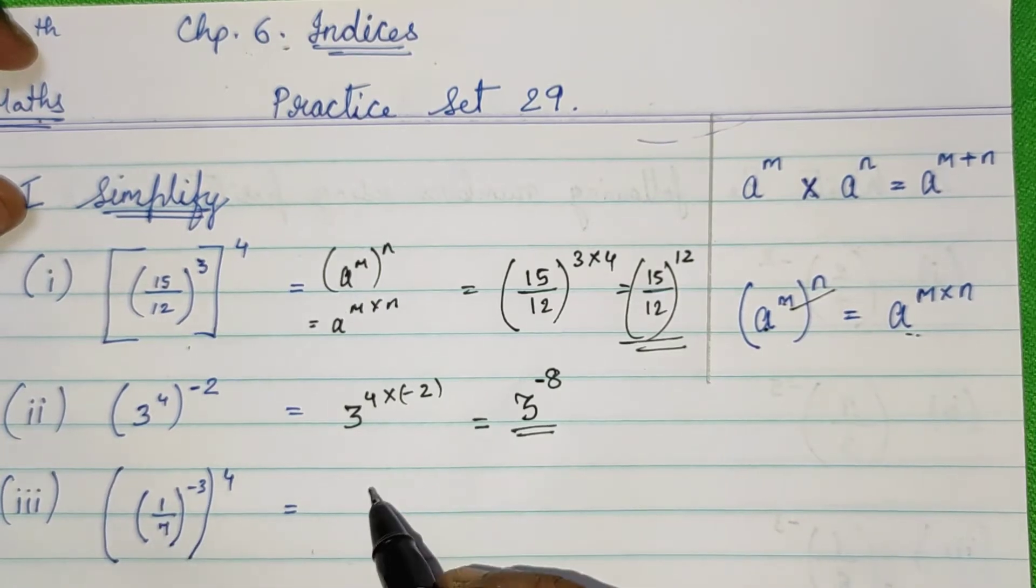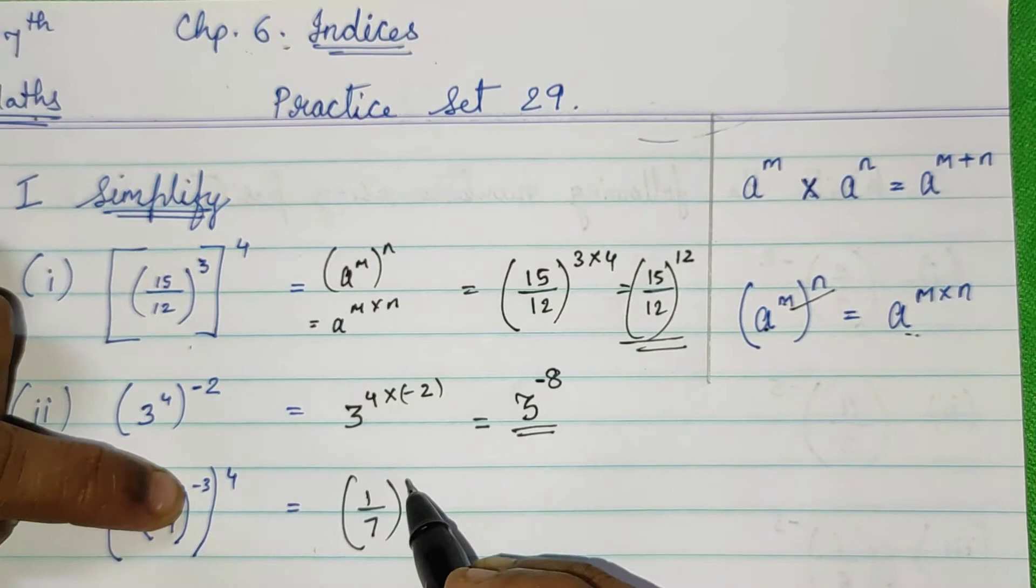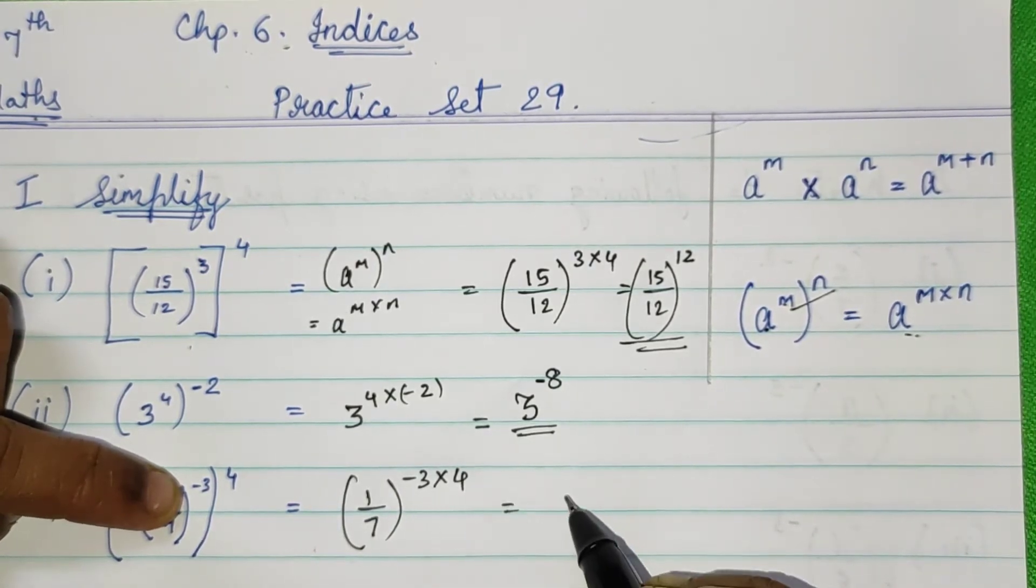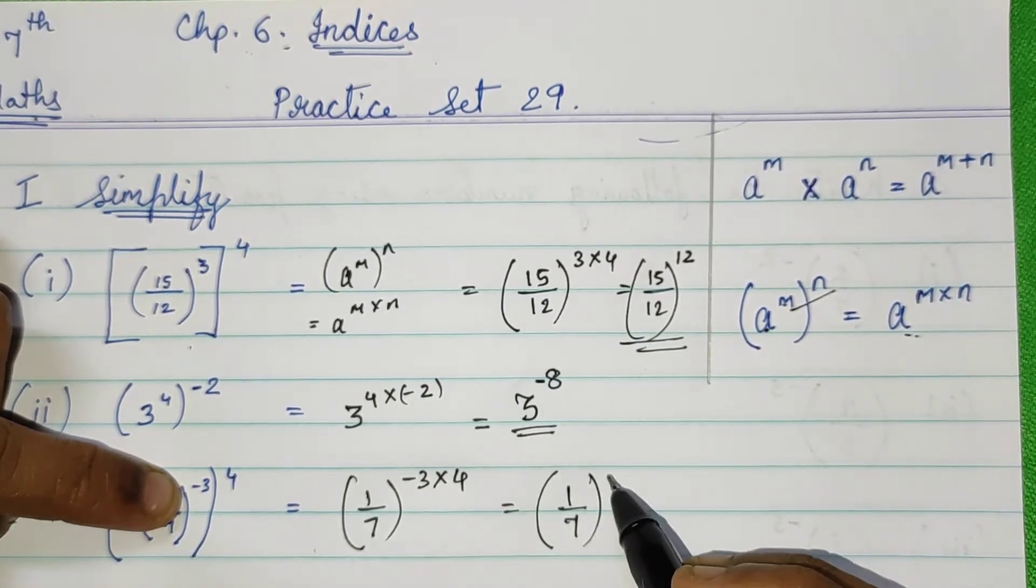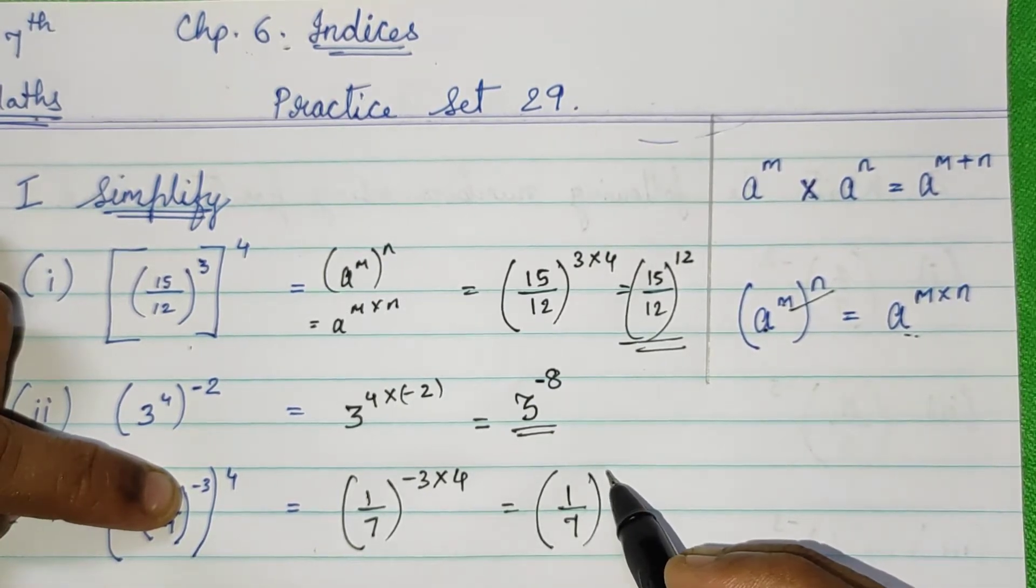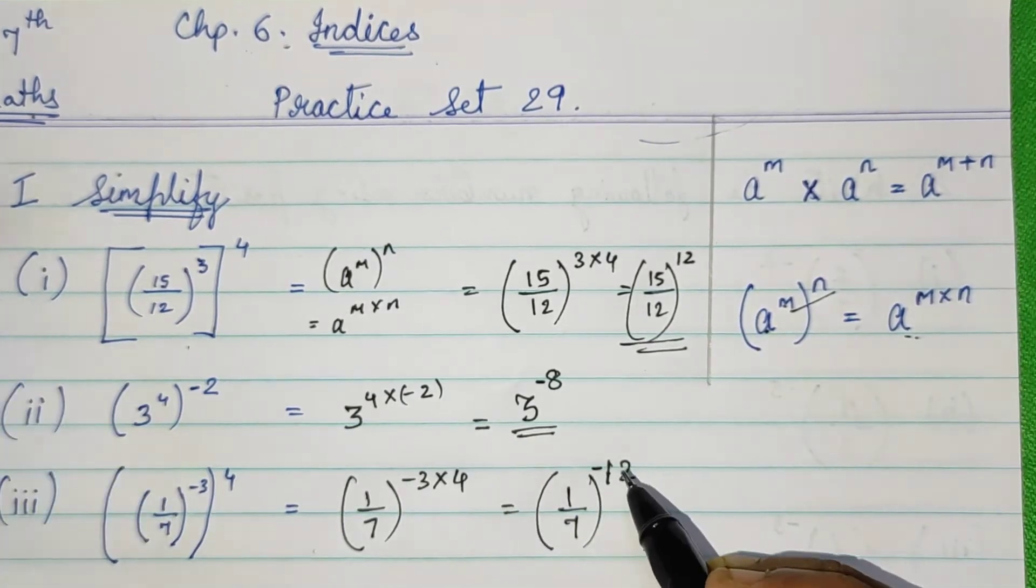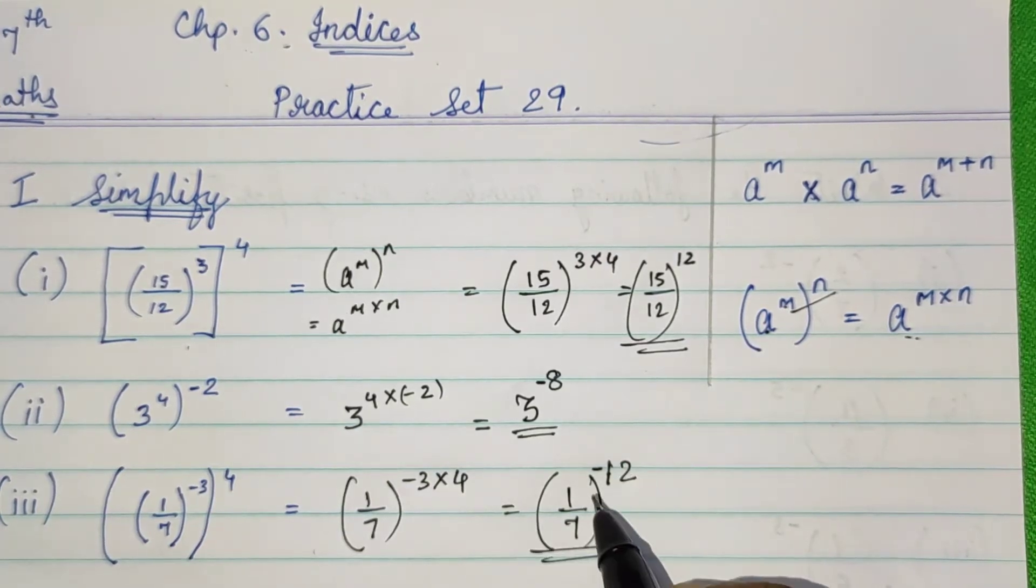1 upon 7 the whole raised to minus 3 into 4. So 3 times 4 is 12, but minus into plus is minus. This is your answer.